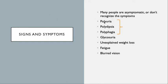Signs and symptoms of diabetes — remember the three Ps: polyuria (frequent urination), polydipsia (being thirsty all the time), and polyphagia (being hungry all the time). Those are the hallmarks of type 2 diabetes.